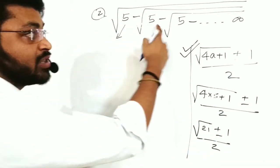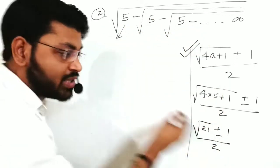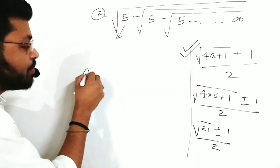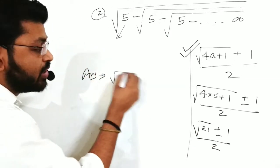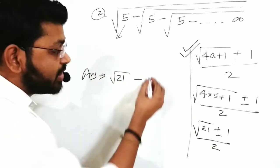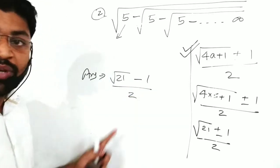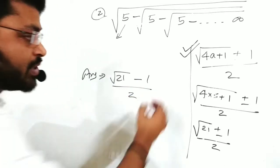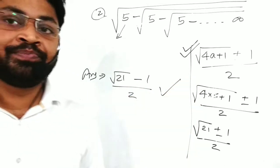If the sign is minus, we use minus in the formula. So for √(5 - √(5 - ...)), the answer is (√21 - 1) / 2. The option will match this — you just tick it. This is easy.